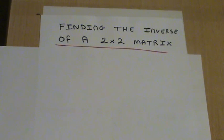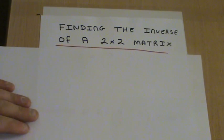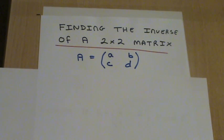Here we're going to look at finding the inverse of a 2 by 2 matrix. Now in general, a matrix A is given as ABCD. This matrix has got two rows and two columns, hence it's a 2 by 2 matrix.